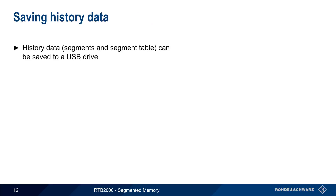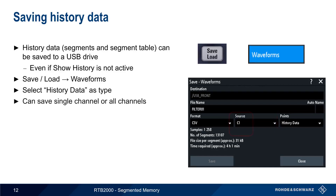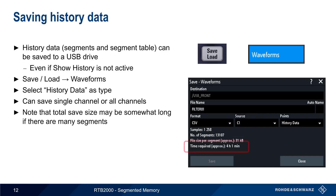History data — that is, the segments and the segment table information — can be saved to a USB drive. This is possible even if Show History is not currently active. To save history data, press the Save/Load button and then choose Waveforms. Be sure to change the data type or points to History data. Note that the segment data can be saved for a single channel or for all channels. If the number of segments is very large, the time required to save them can be somewhat long.